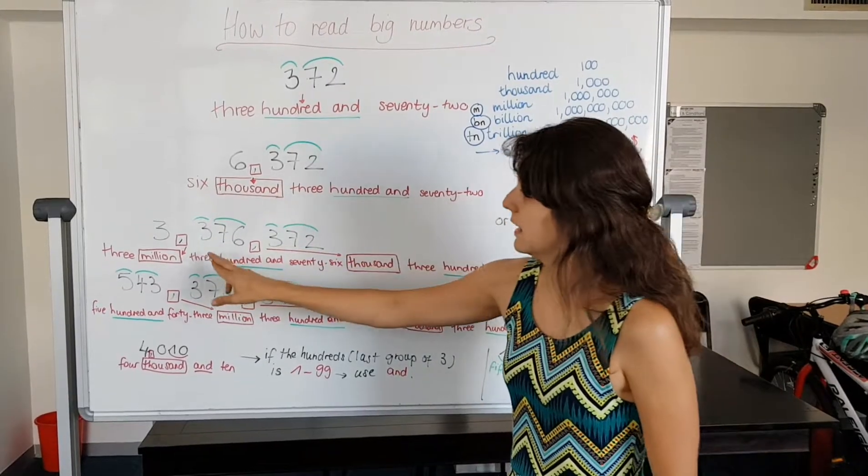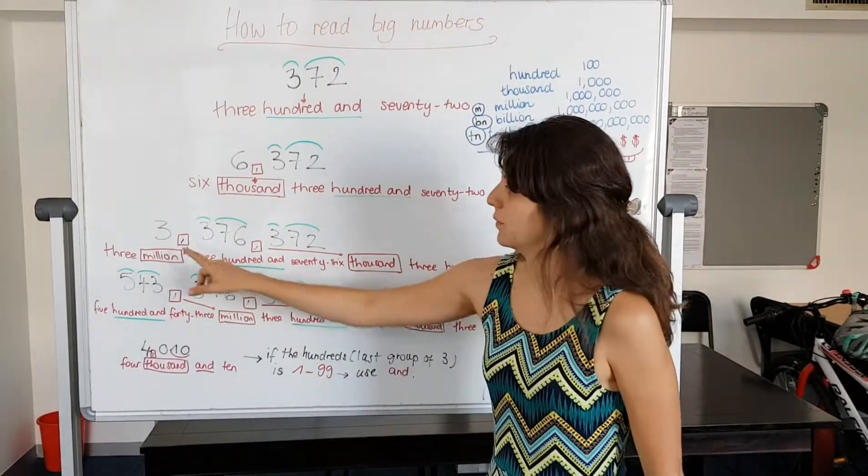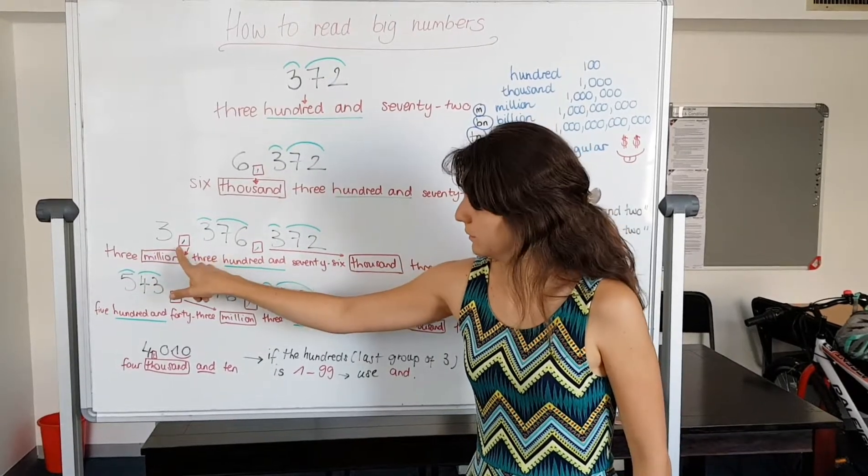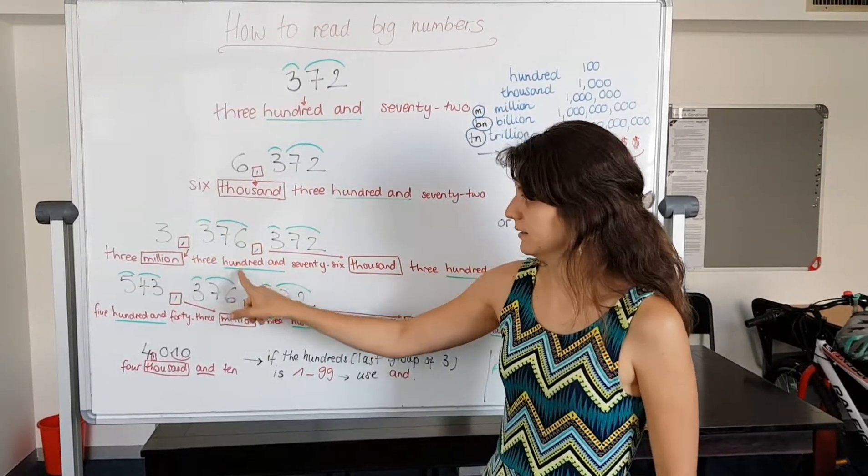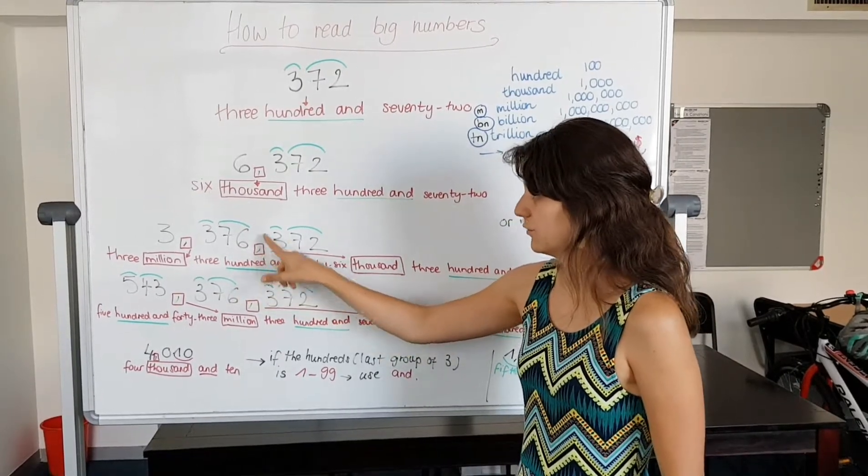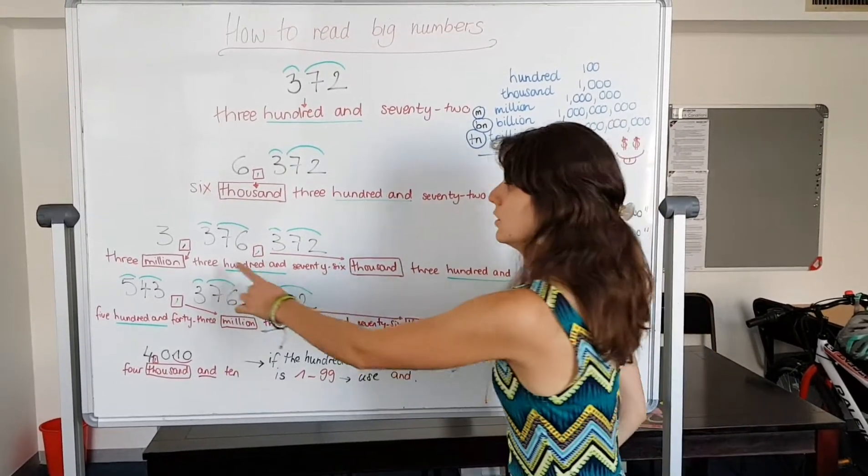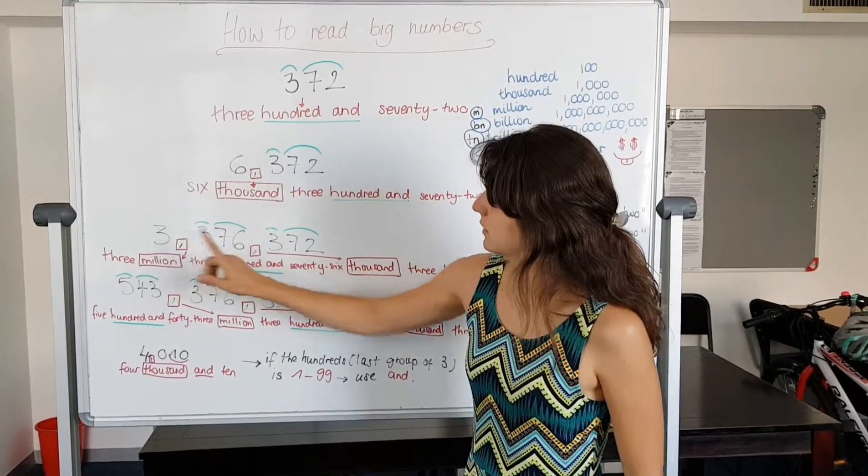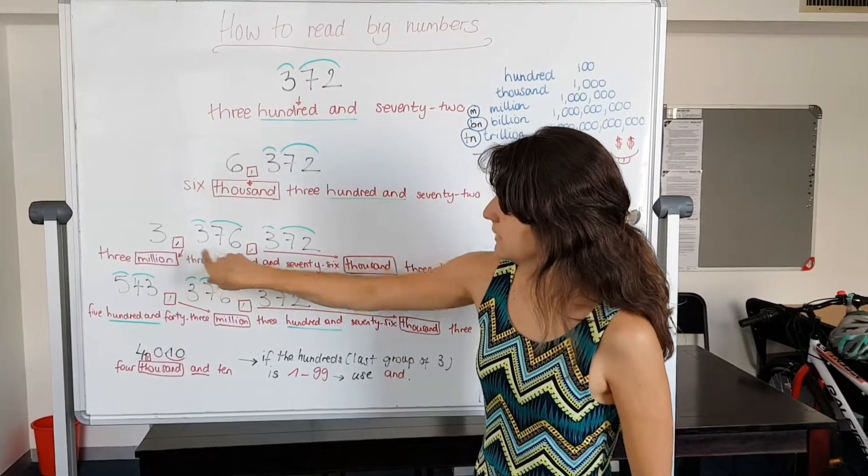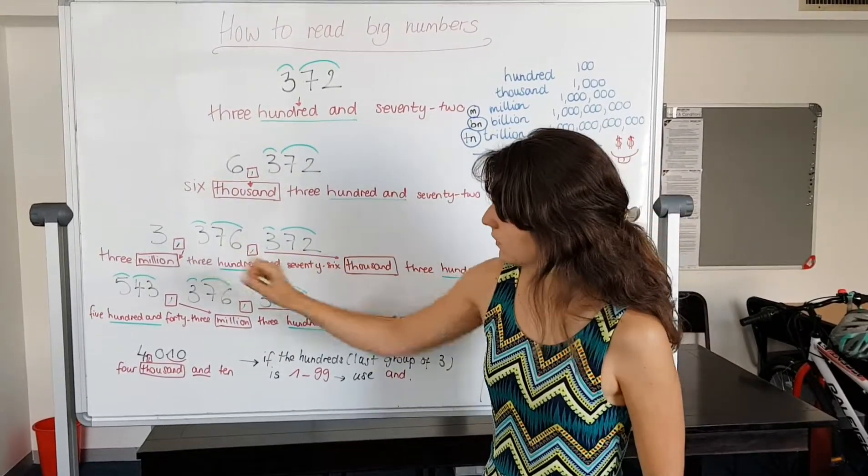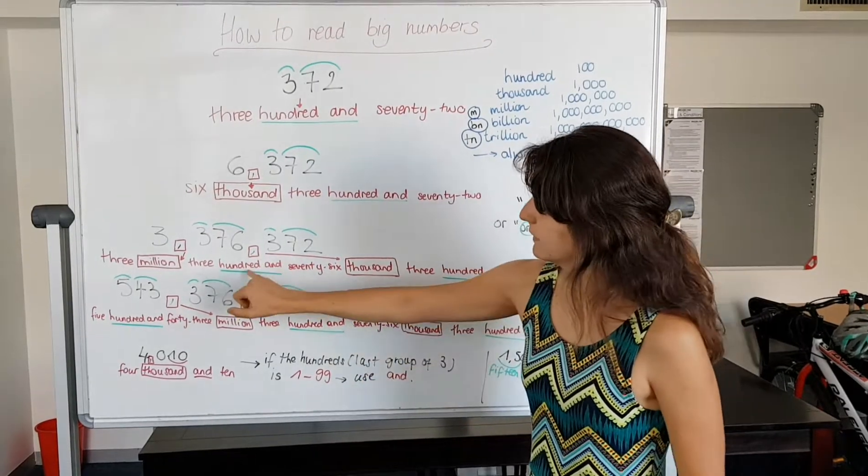Now bigger number with million. Three million, million, three hundred and seventy-six thousand three hundred and seventy-two. So this one will be million, and then the next three after that is thousand, and the last three is a hundred. We always give the three at the hundred.